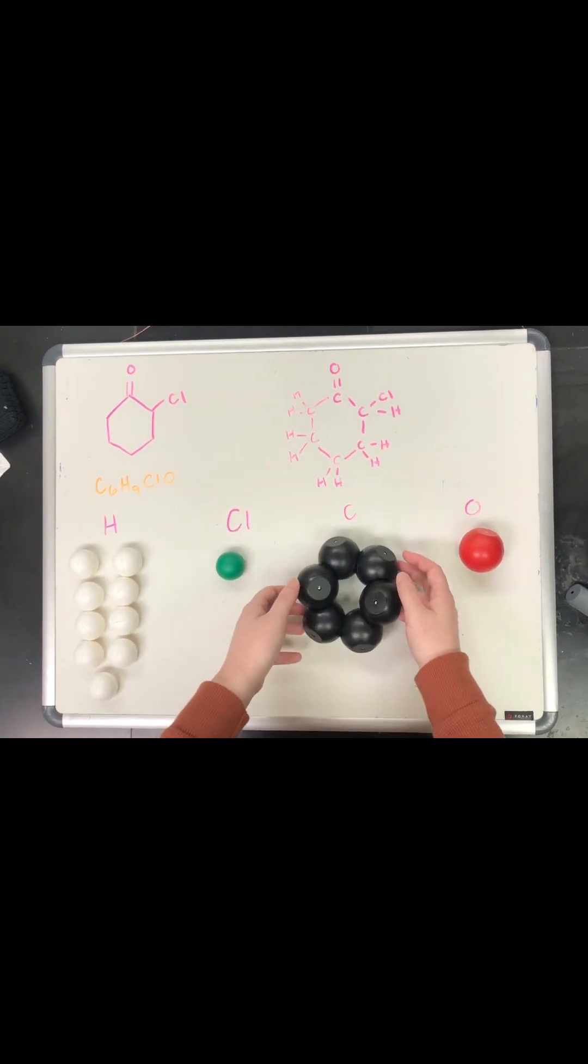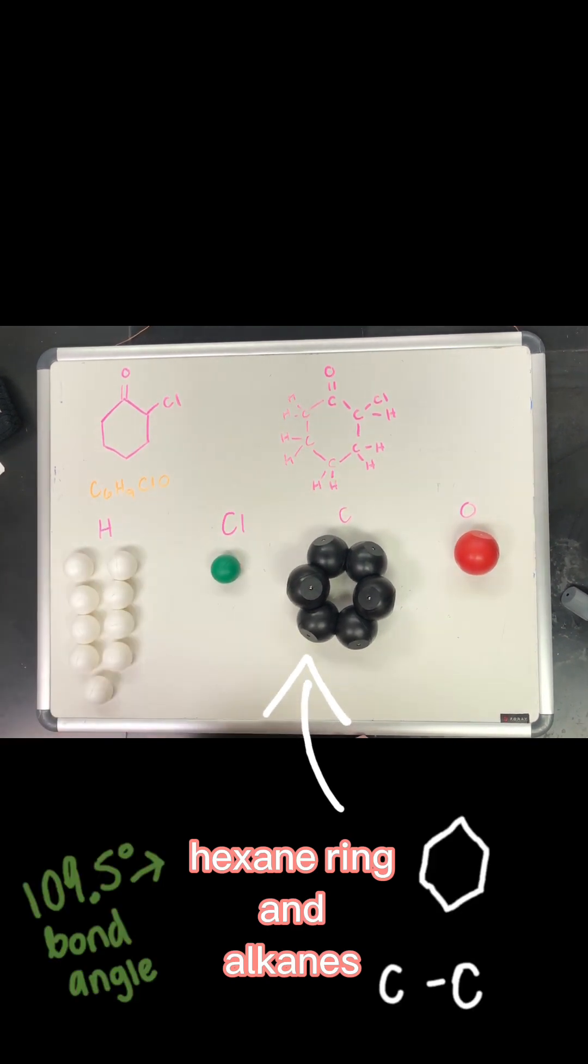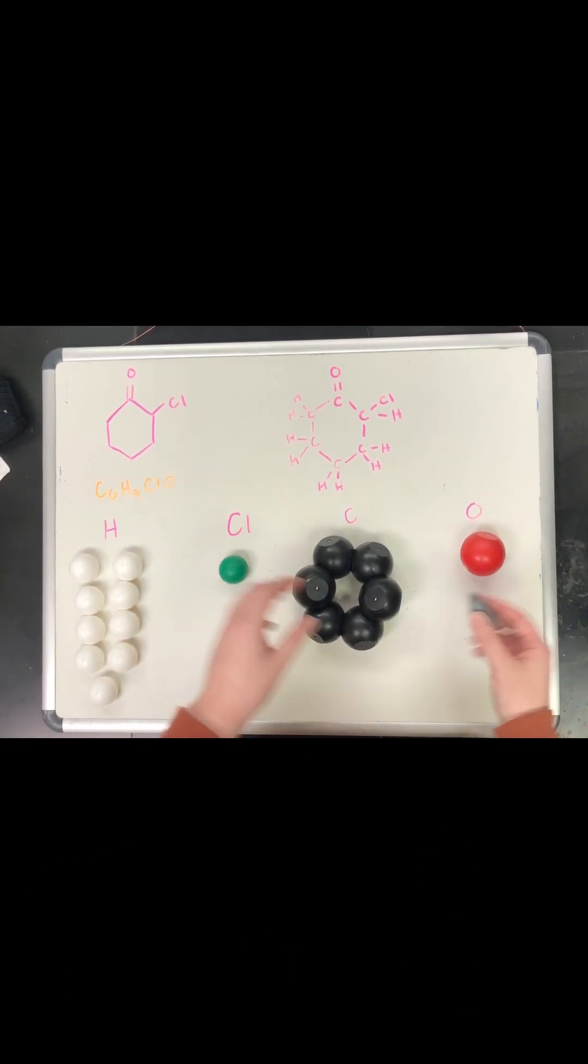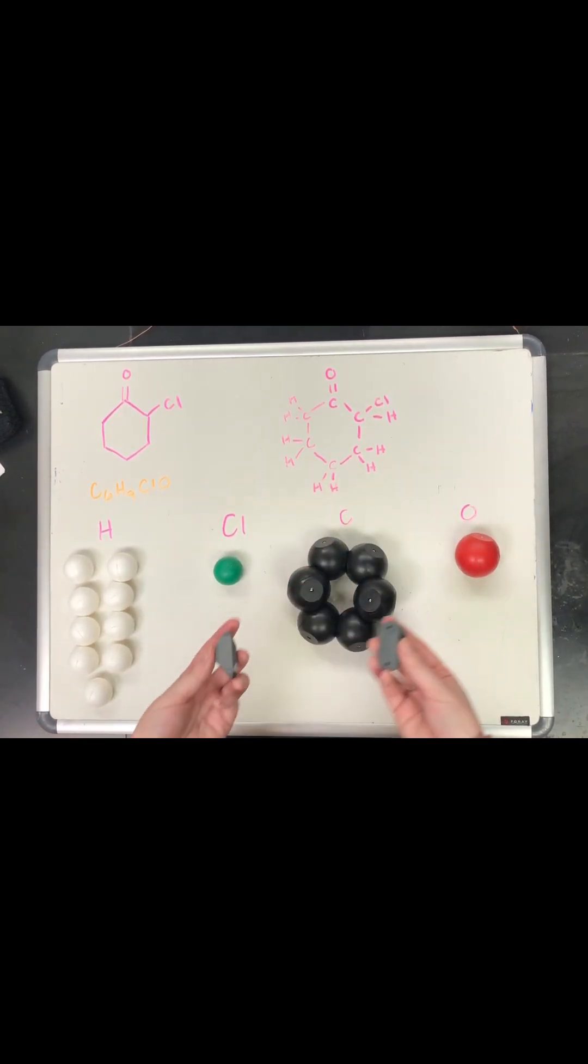All right, so now we have hexane ring. In order to make 2-chlorocyclohexanone, we need the oxygen, and that's a double bond. So we're going to be using these pieces to make that bond a double bond.